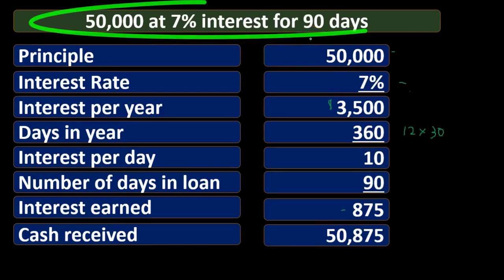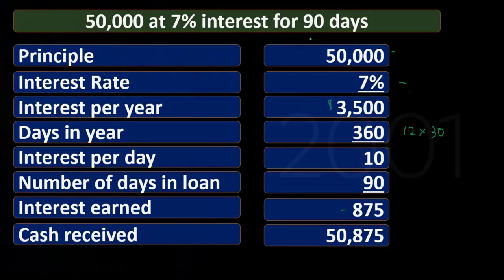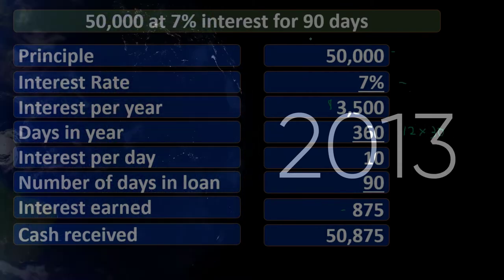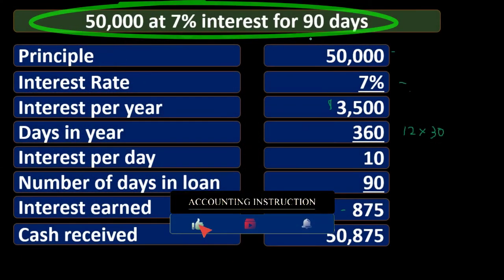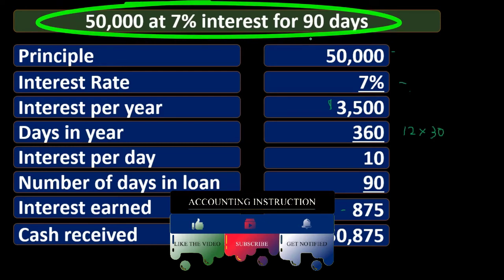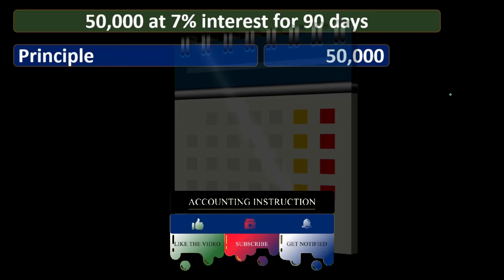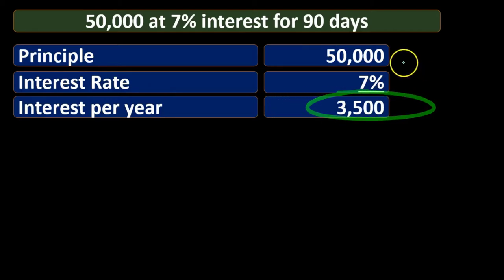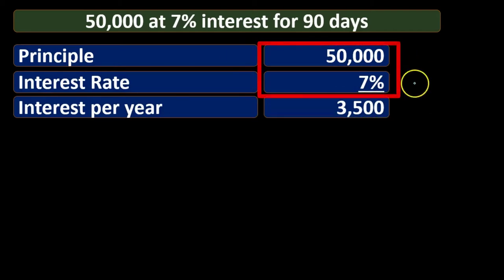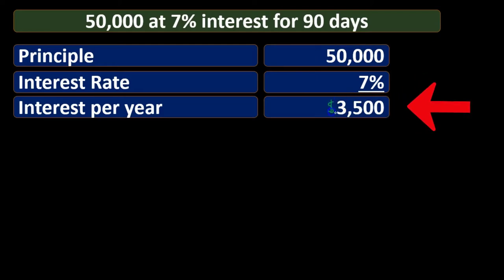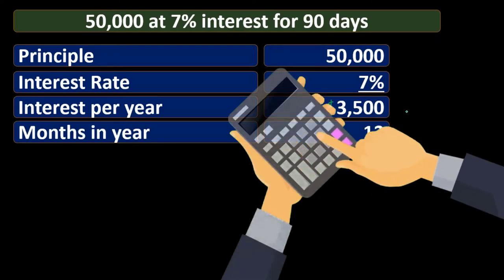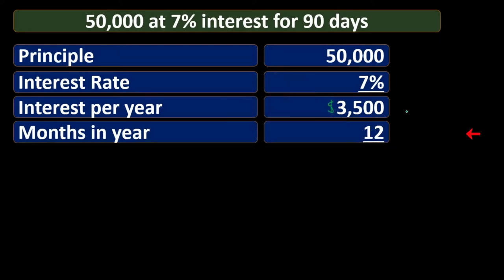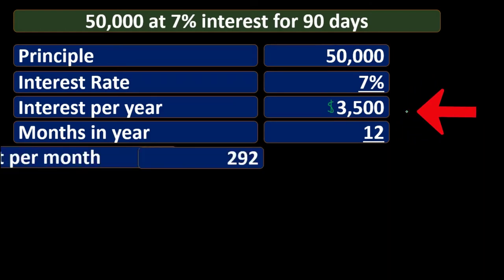This approach — breaking it out by days — is one of the easiest ways to see this. Depending on the loan type, we might break it out by days or by months. For a shorter-term loan we may use days; for a longer term we might round to months instead. Now the same type of idea using months: we take $50,000 multiplied by 7%, giving us $3,500 interest per year.